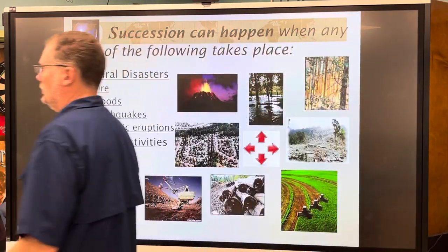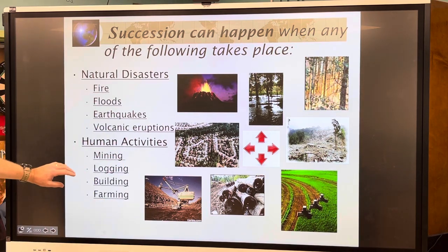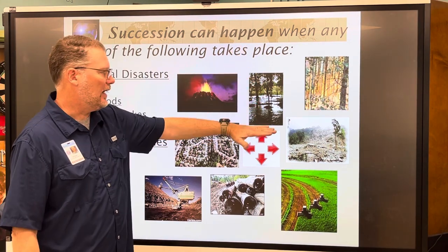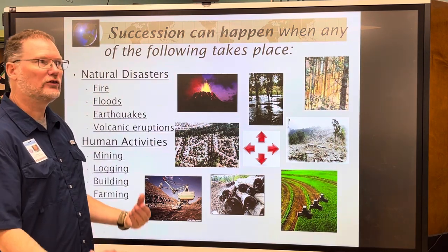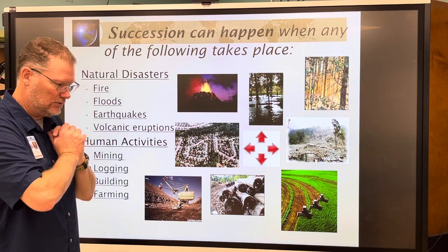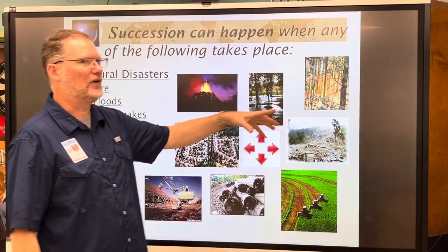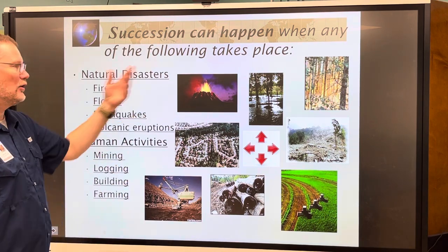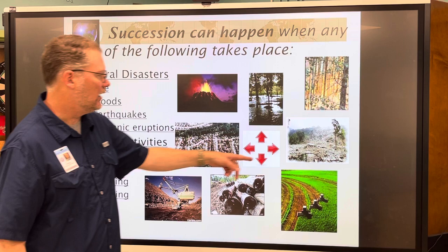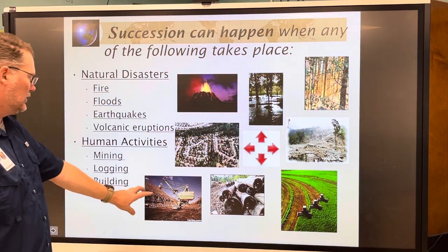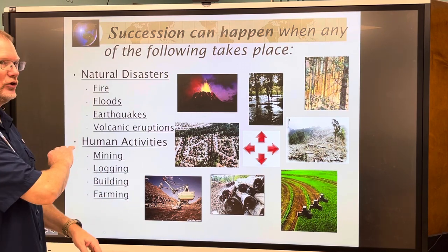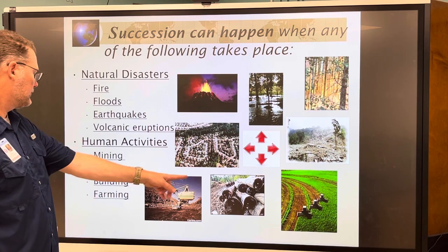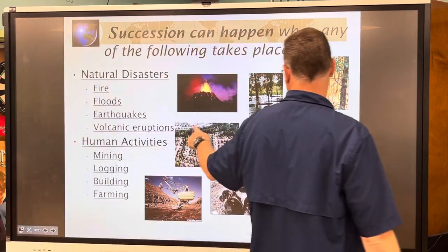Succession can be triggered by natural events — fire, floods, earthquakes, and volcanic eruptions. A flood or saltwater tsunami kills freshwater plants, leaving empty land. Some fires are beneficial, cleaning out underbrush while leaving trees alive; others destroy everything. Earthquakes and landslides can wipe out whole areas. Human activities like phosphate mining in Florida turn the surface into a moonscape with nothing alive, as well as logging, building, and farming.